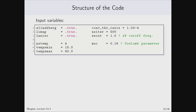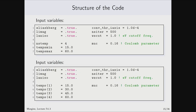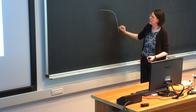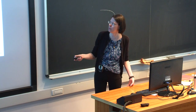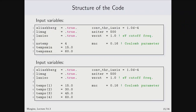You can specify temperatures in two ways. For uniform spacing, give minimum and maximum temperature with a step count. Alternatively, if you want non-uniform sampling — for example, a larger distance between temperature points far from Tc but closer sampling near Tc — you can directly specify individual temperature values.